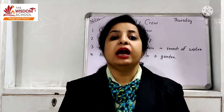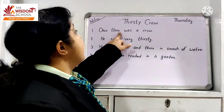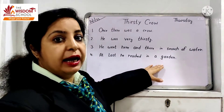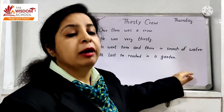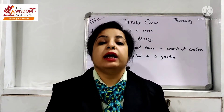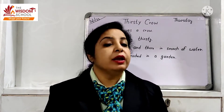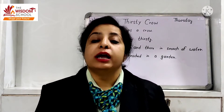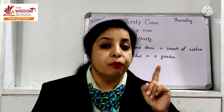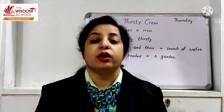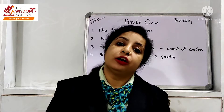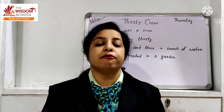Kids, in our story, our first line is: Once there was a crow. Mujhe pata hai aap abhi isko read nahi kar sakti ho. But maine yeh isliye yahan par likha hai taaki aap ki mamma ko help mil jaye — mamma kahi par note down kar lein, aur aap ko achhe se learn karva sakein. Once there was a crow. It means ki ek baar ek kauwa tha. But aap ne English mein learn karni hai. Toh humari first line kya hai? Once there was a crow. Sabhi bachche mere saath bolo: Once there was a crow.